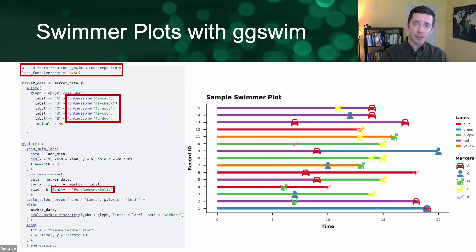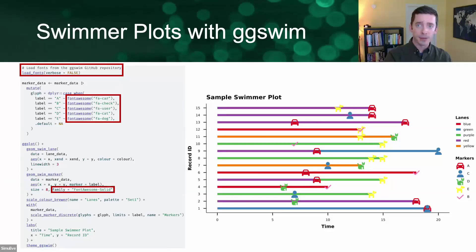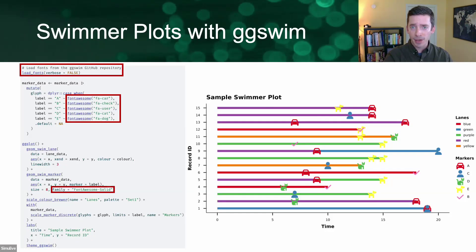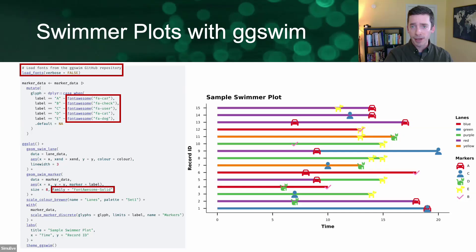As I mentioned, ggswim also supports certain font libraries — the free open source Font Awesome and Bootstrap Icon libraries. ggswim takes care of the font orchestration via a simple load function and then offers conversion functions for the corresponding font. All that remains for the user is to specify the font family, and you get pretty displays.